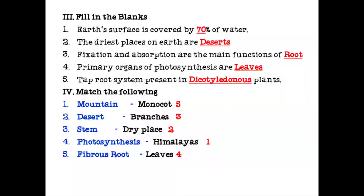Fill in the blanks. Earth's surface is covered by 70% of water, or we can say more than 70%. The driest places on the earth are deserts. Spelling of desert: D-E-S-E-R-T-S.